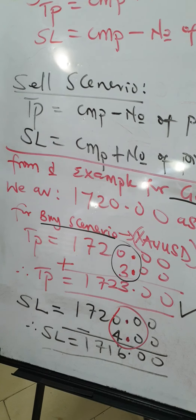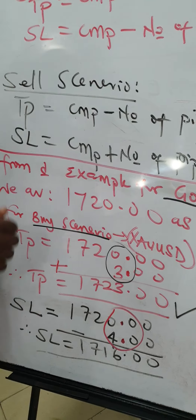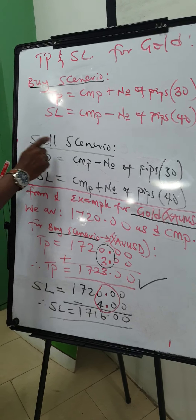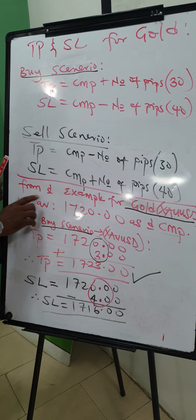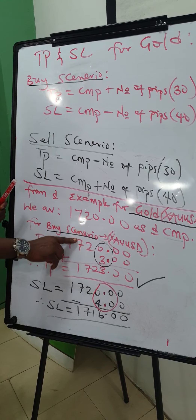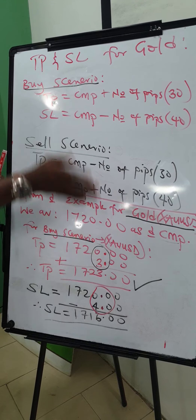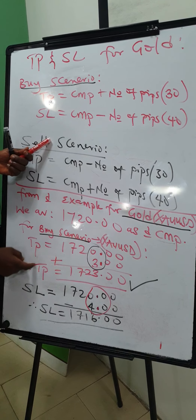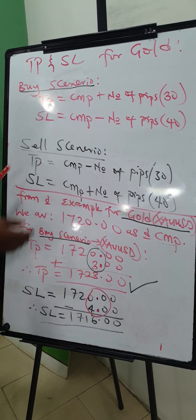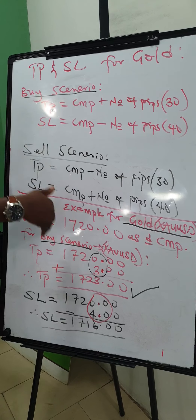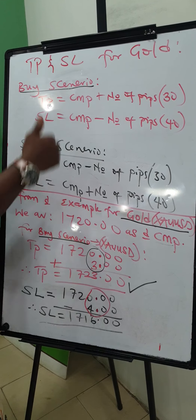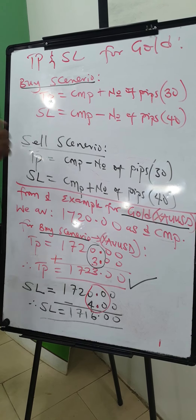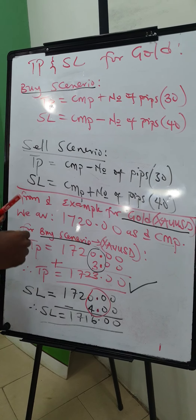We've now done the buy scenario. Next, we will calculate the sell scenario for gold — the take profit and stop loss — so that whichever direction you are trading, whether buying or selling gold, you know how to calculate your stop loss and take profit.